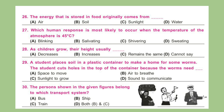Question 27: Which human response is most likely to occur when the temperature of the atmosphere is 45 degrees Celsius? Question 28: As children grow, their height usually dash? Question 29: A student places soil in a plastic container to make a home for some worms. The student cuts a hole in the top of the container because the worms need dash. Question 30: The persons shown in the given figures belong to which transport system?